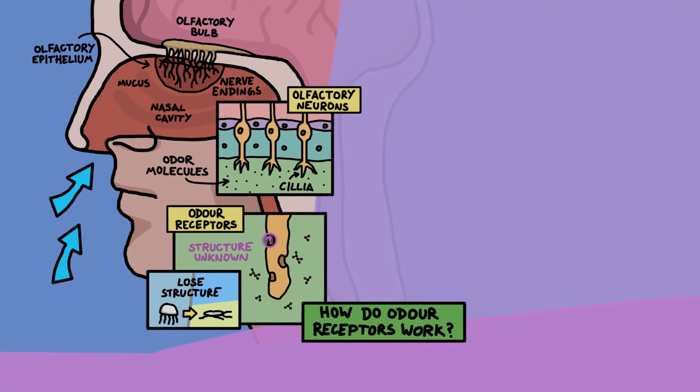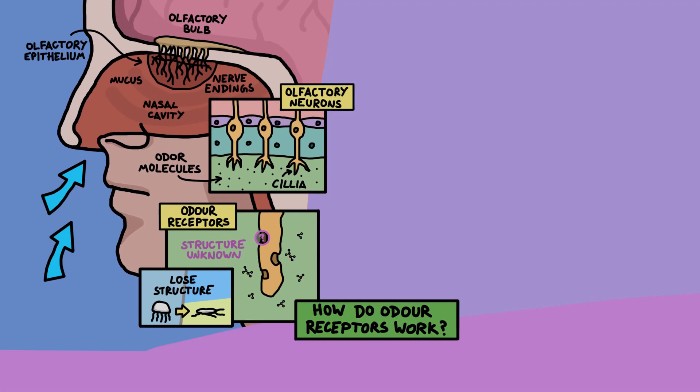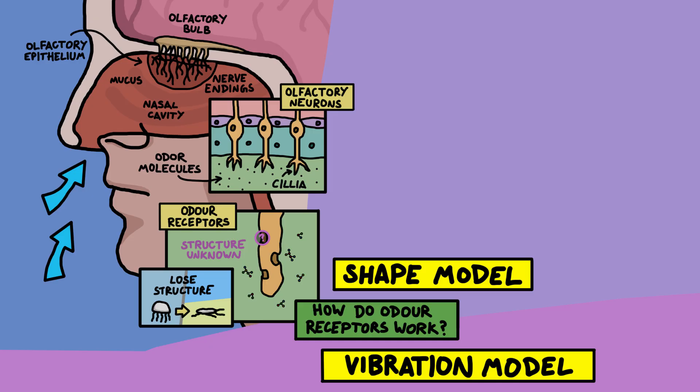Now there's two main theories about how smell receptors work, shape and vibration. The shape theory says that the smell receptors have specific shapes that fit the odor molecules, kind of like a key fitting into a lock.